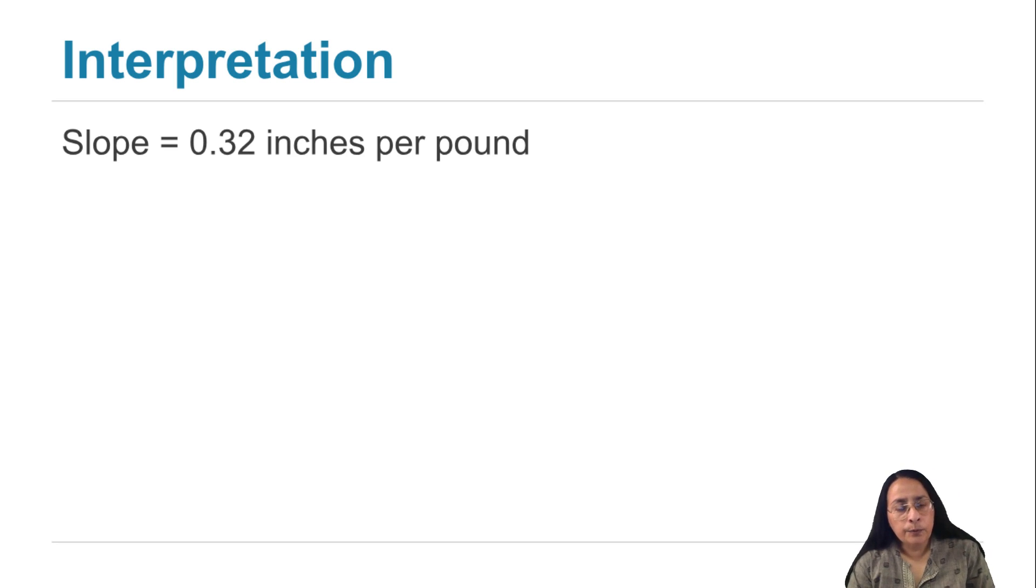In other words, for every pound increase in weight, something goes up by 0.32 inches.